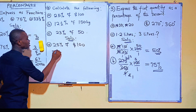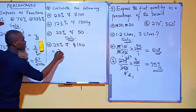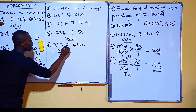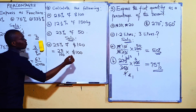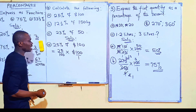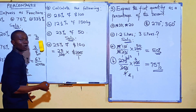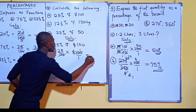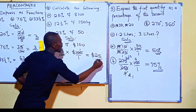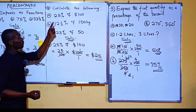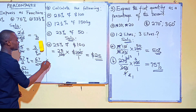So 25% of $100 is the same as 25 over 100 times $100 over 1. The two 100s cancel, so you get 25 times $1 = $25. Therefore 25% of $100 is $25.